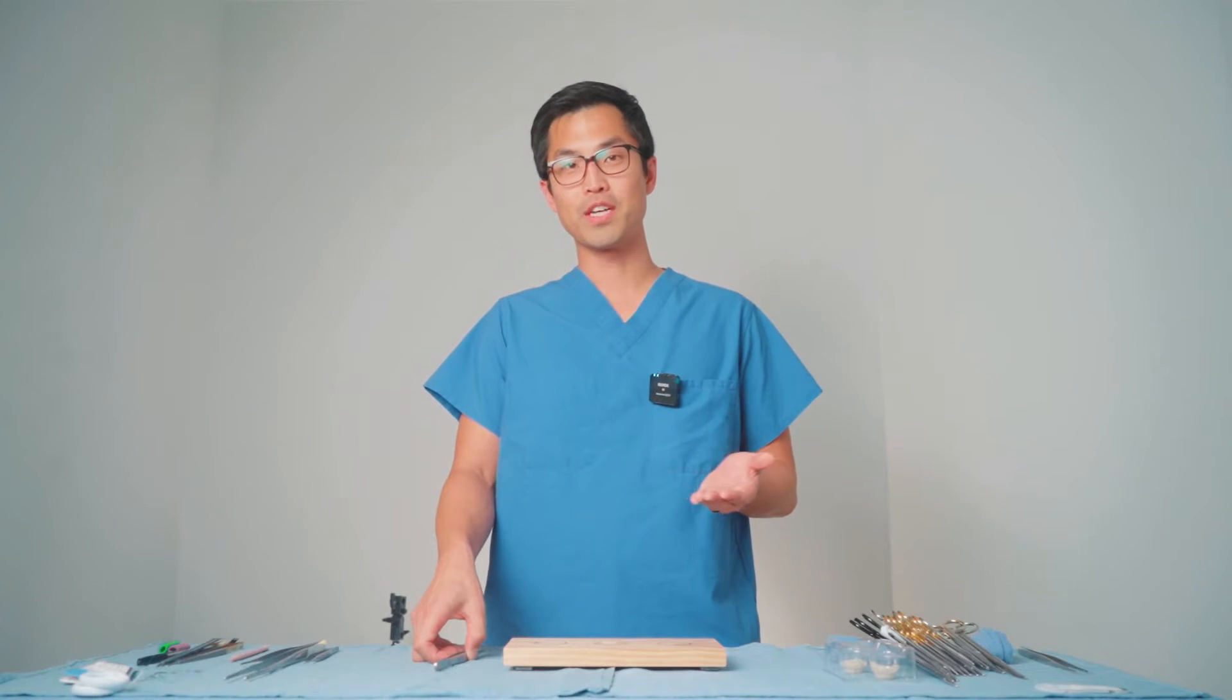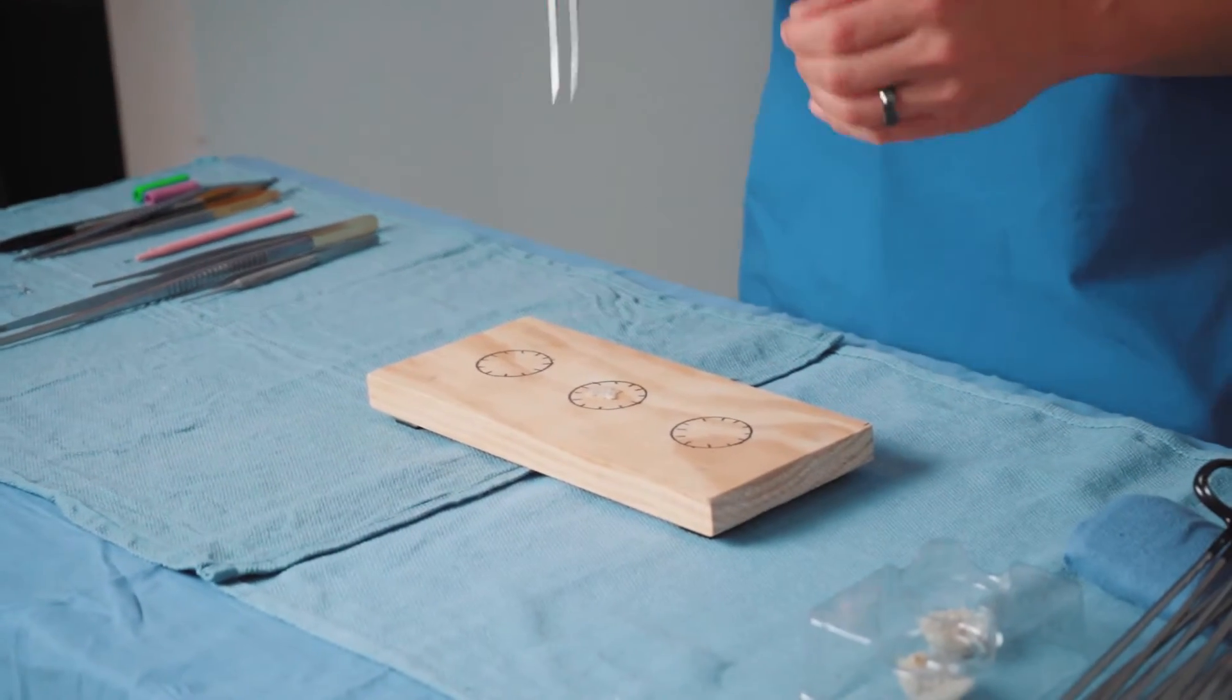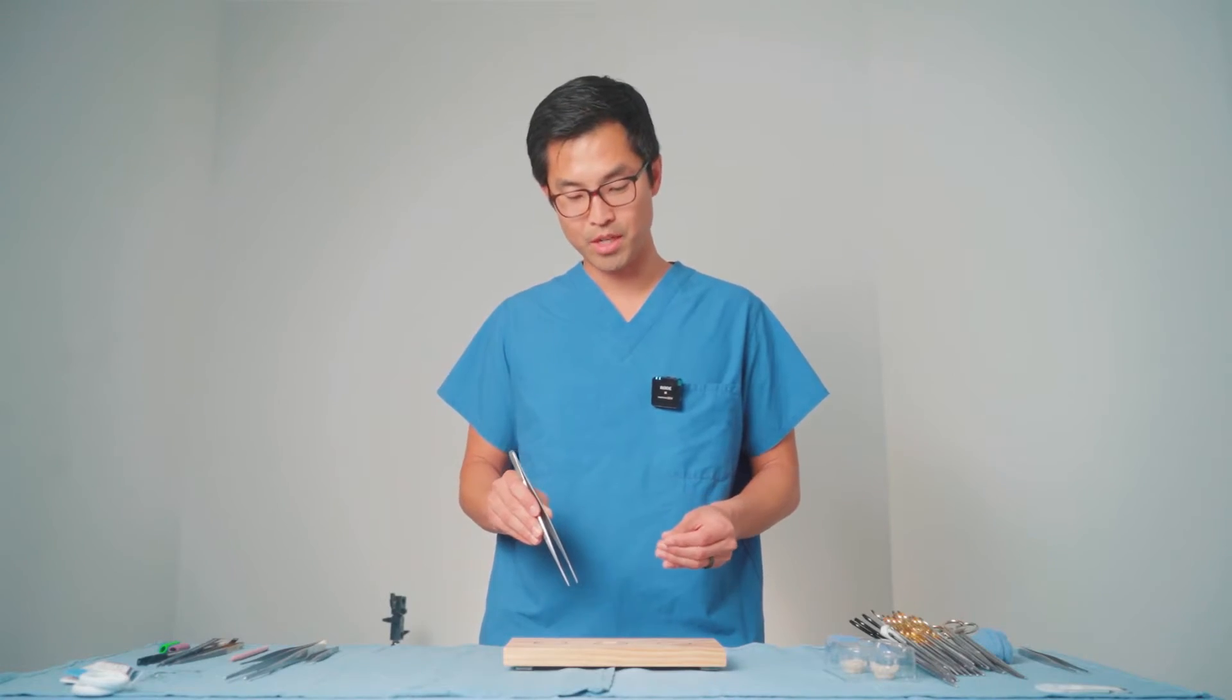So one of the exercises that we came up with is this concept of a rice transfer board. You want to use something that's very small and irregular in shape so it forces you to really get your wrists and fingers comfortable in picking up these objects.